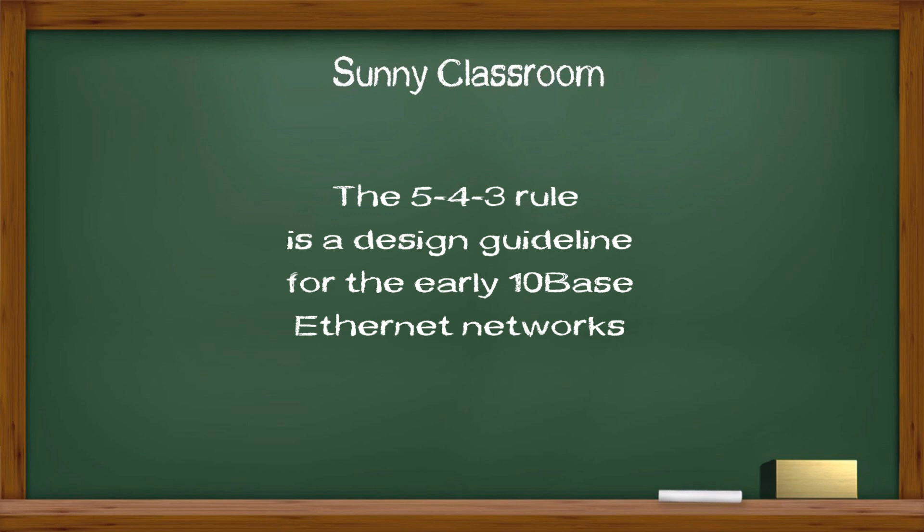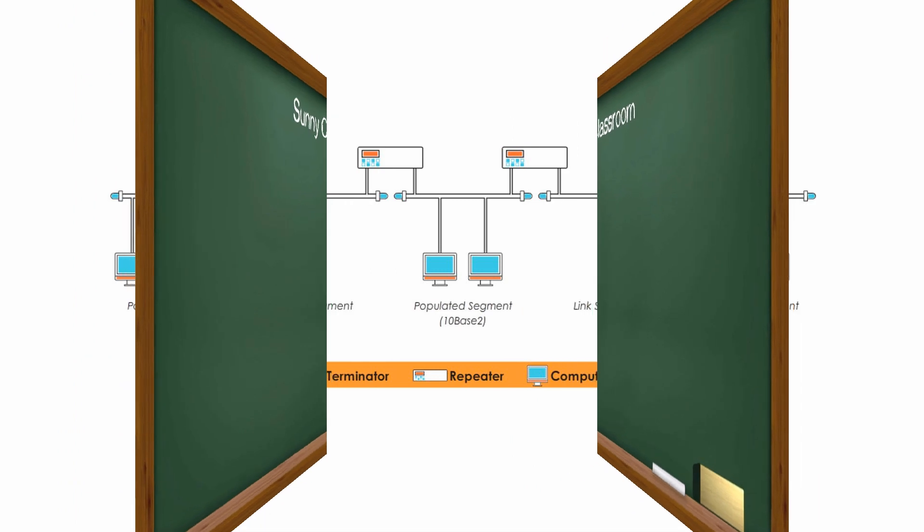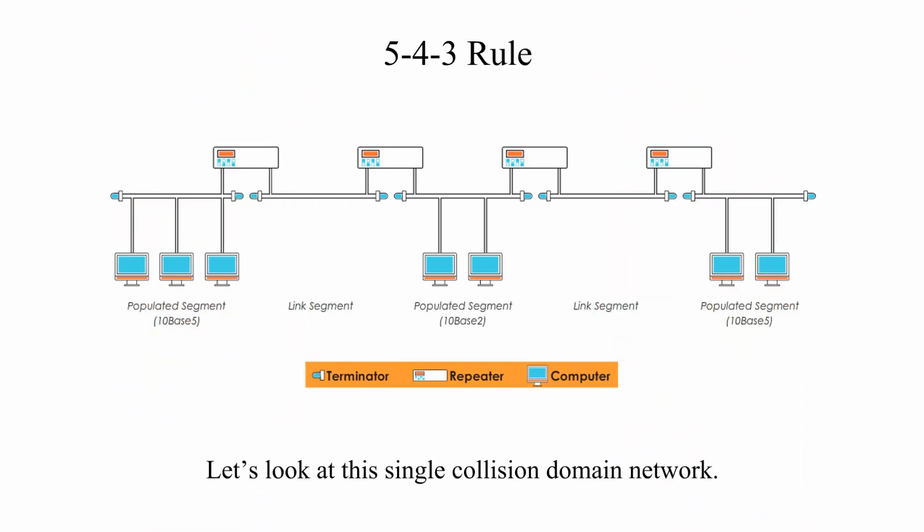The 5-4-3 rule is a design guideline for the early 10Base Ethernet networks, where every host shared the backbones with repeaters used to connect different segments. Let's look at this single collision domain network.